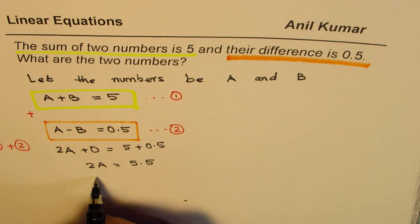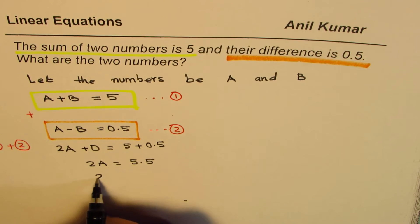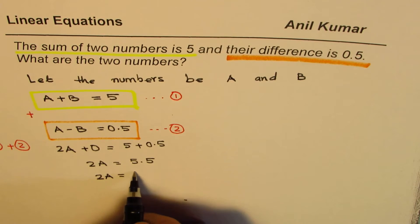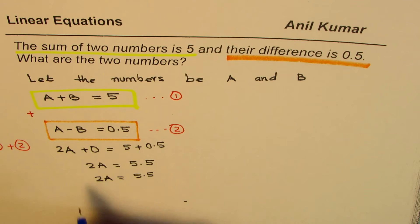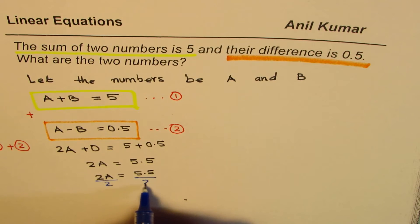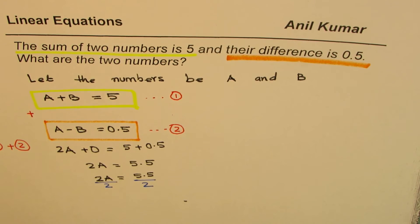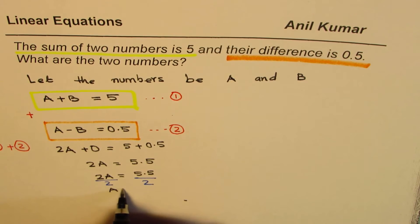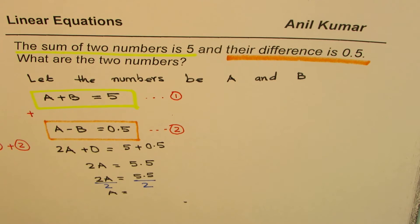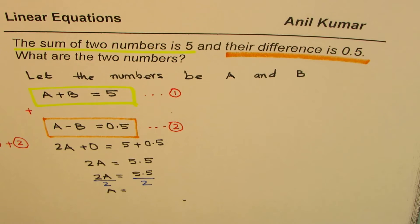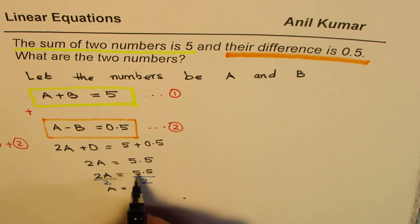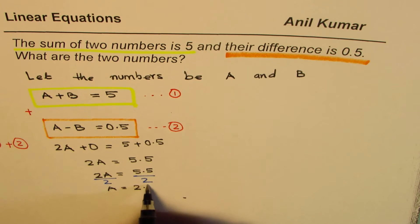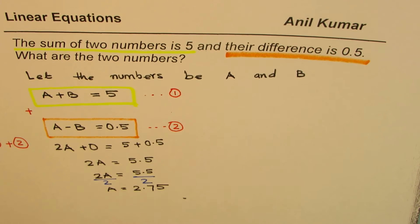So I have 2A equals 5.5. I will divide both sides by 2 to find A. So that gives me the value of A as half of 5.5. You can also use calculator at this stage. Dividing by 2, you get 2, that is 4. Then you get 15, so 0.75. So you get A as 2.75.